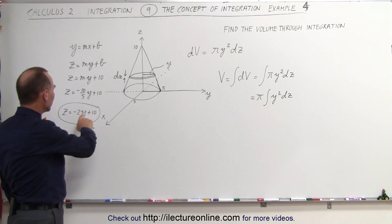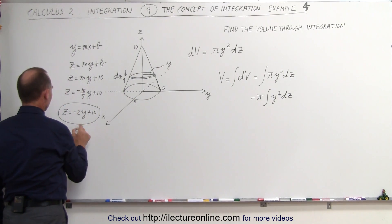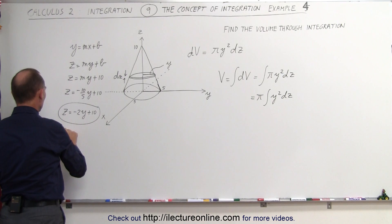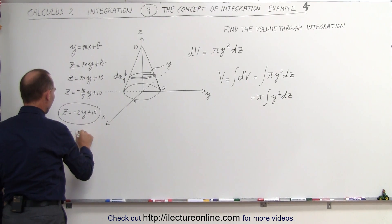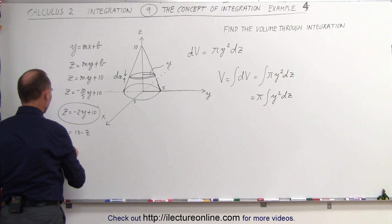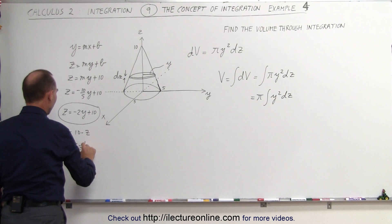Since we need y squared, we need to solve this for y. Moving this to the other side, we get 2y is equal to 10 minus z, because the z becomes negative. Divide both sides by 2, we get y is equal to 5 minus 1 half z.